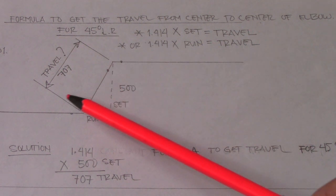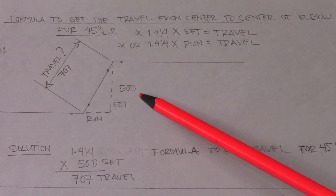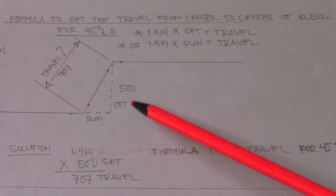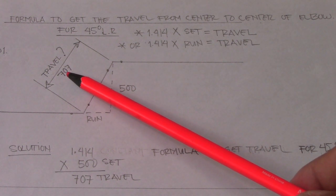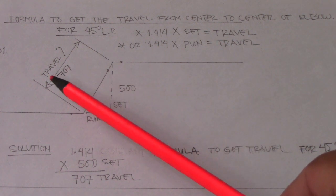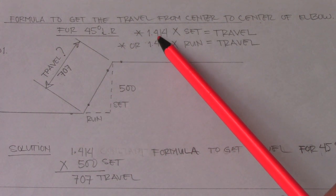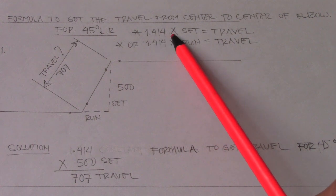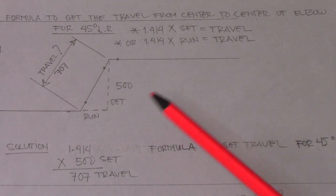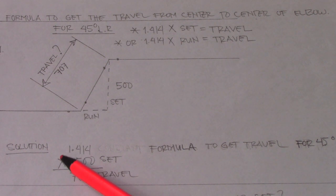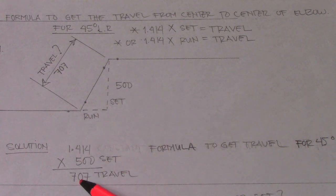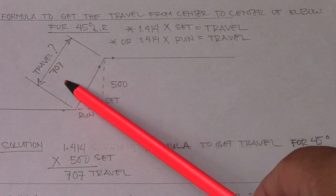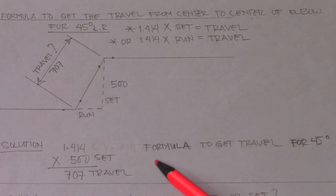In example number one, we have a given set of 500. We will find the travel. To get the travel, just multiply 1.414 by the set. Solution: 1.414 × 500 = 707. So our travel is 707.